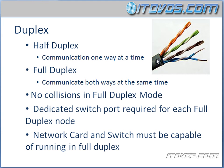Half duplex Ethernet only uses one twisted pair. This is actual Ethernet cable — if you cut it open, this is what it looks like. There are four twisted pairs of wires. Here's one twisted pair, and that's all half duplex Ethernet is going to use. So communication is going to flow one way or the other — it can't flow both ways at the same time.